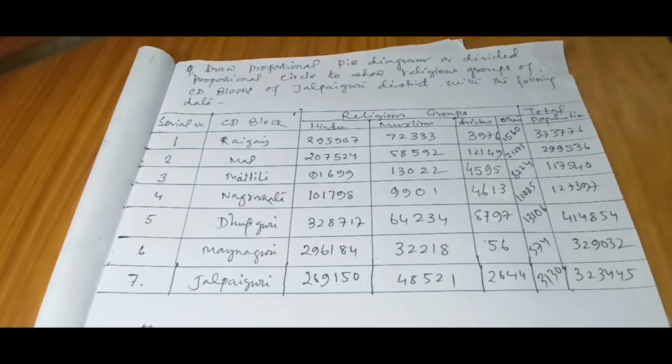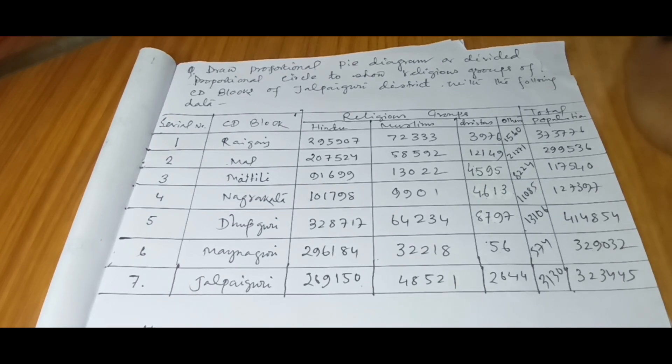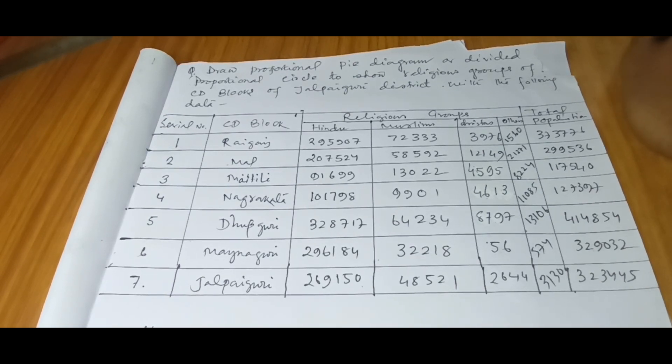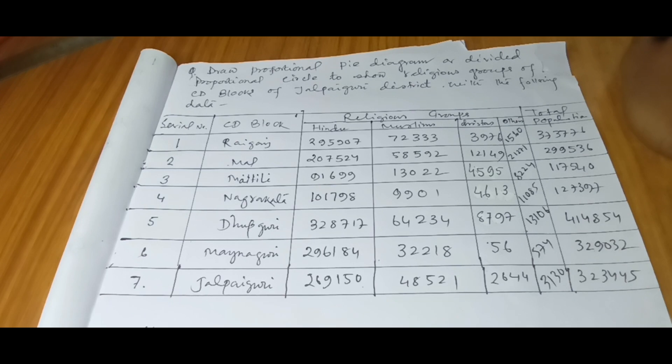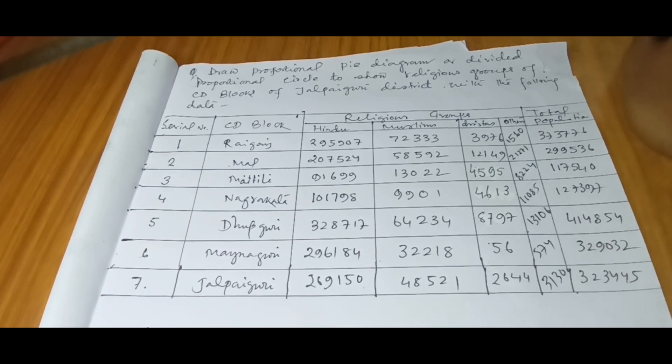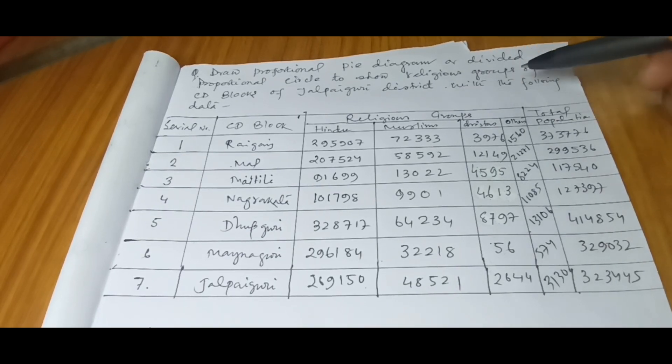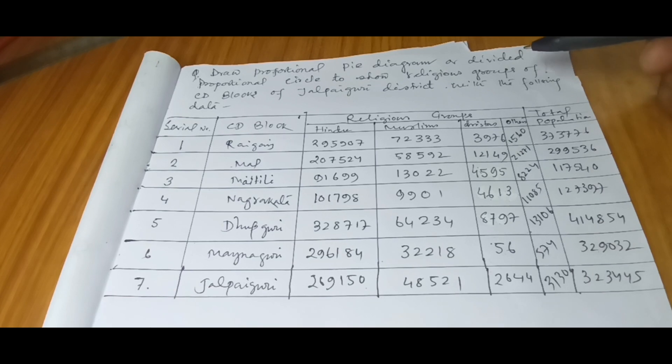Hello everyone, welcome to Geographic Medicine. We are back with another question sent by our viewer. The question goes like this: draw a proportional pie diagram or divided proportional circle to show religious groups of CD blocks of Jalpaiguri.